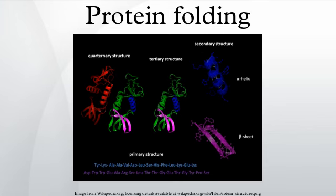Minimizing the number of hydrophobic side chains exposed to water is an important driving force behind the folding process. Formation of intramolecular hydrogen bonds provides another important contribution to protein stability. The strength of hydrogen bonds depends on their environment; H-bonds enveloped in a hydrophobic core contribute more than H-bonds exposed to the aqueous environment to the stability of the native state.